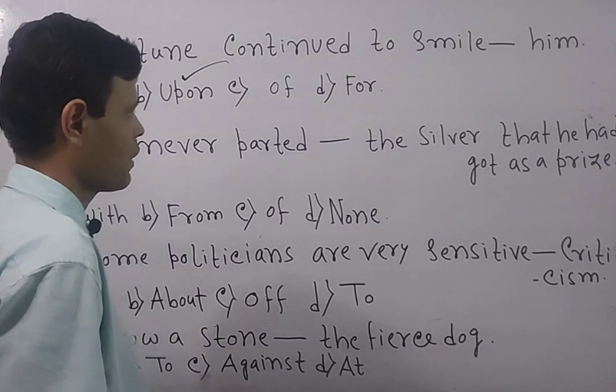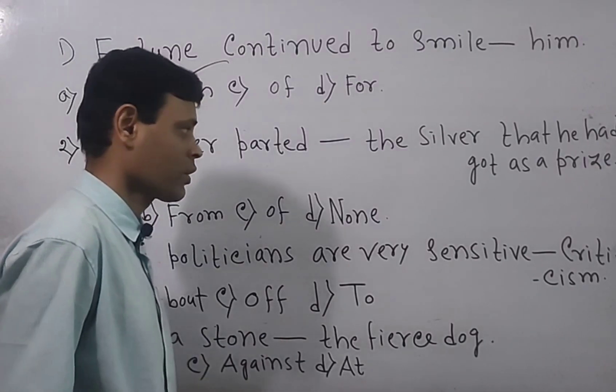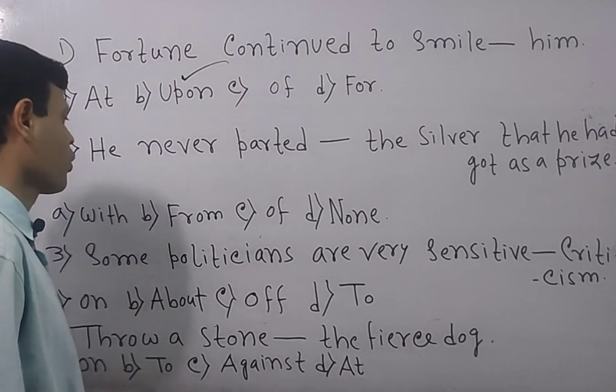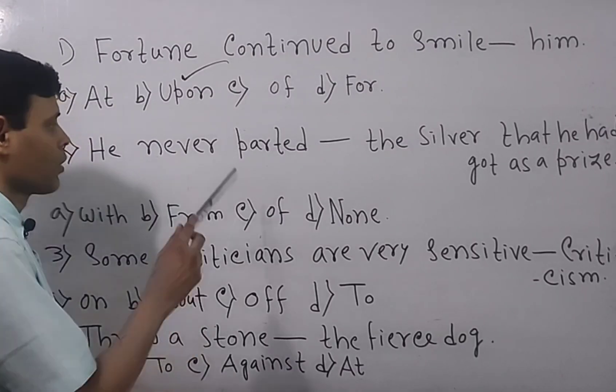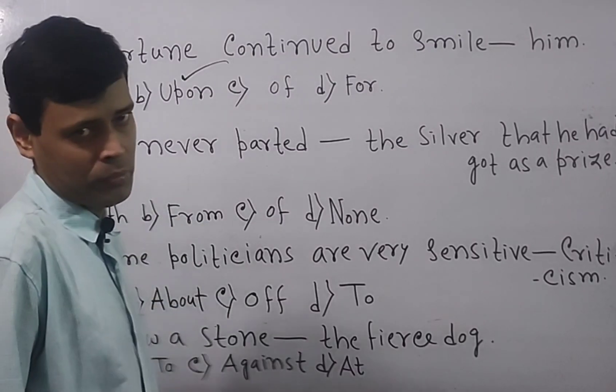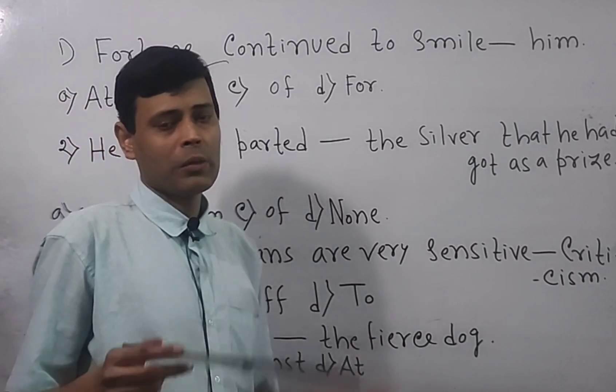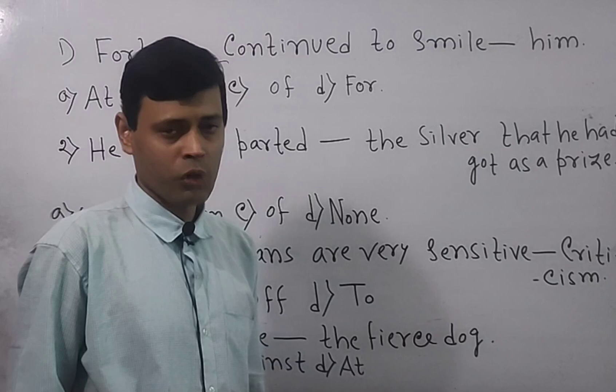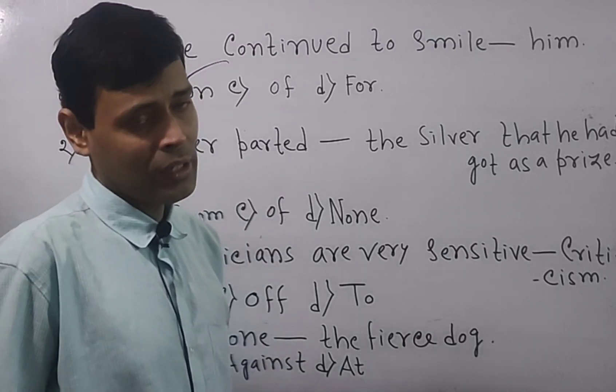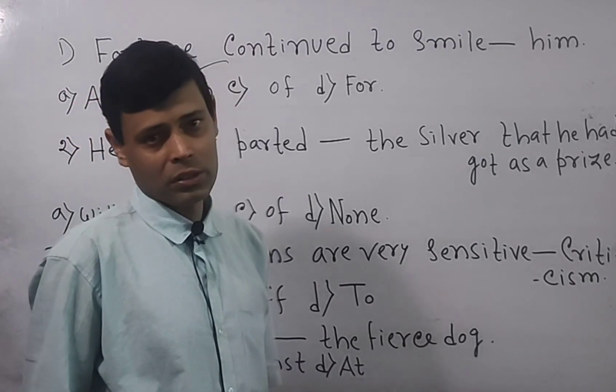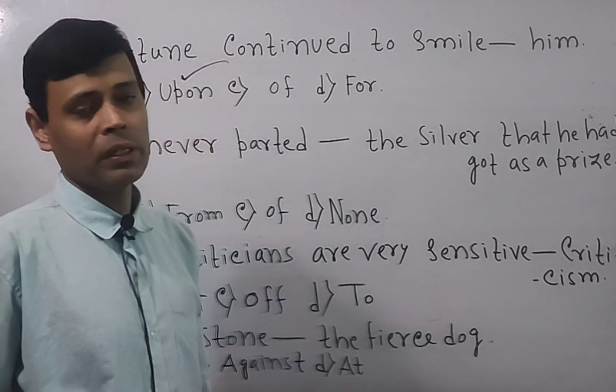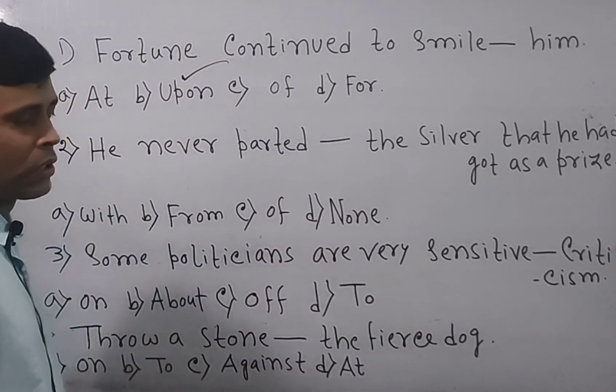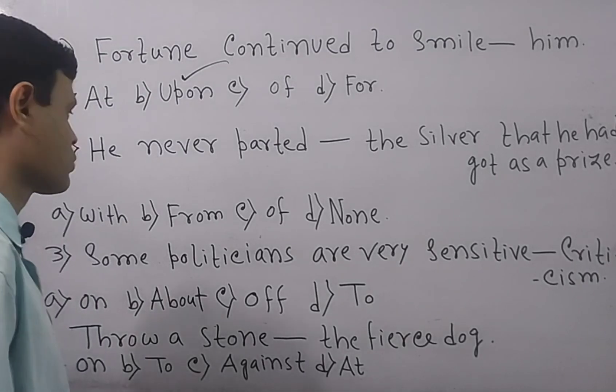He never parted the silver that he had got as a prize. Options are with, from, of, none. Parted means separated. So whenever the word parted is there, in case of persons from will be used. On the other hand, in case of some objects, with will be used. So here silver is an object not a person.